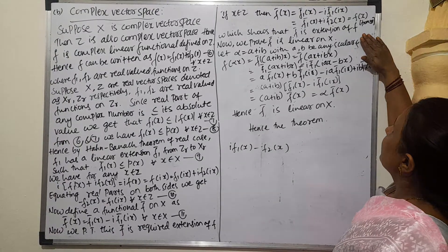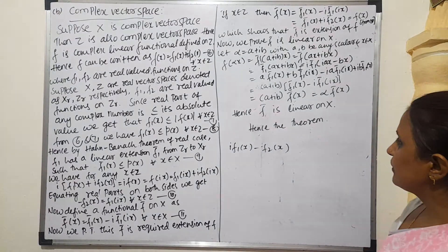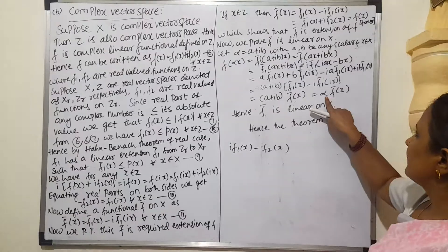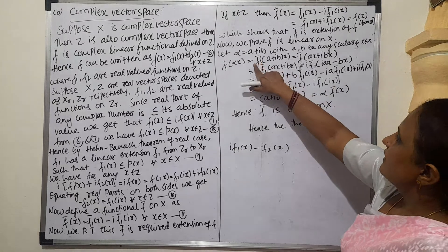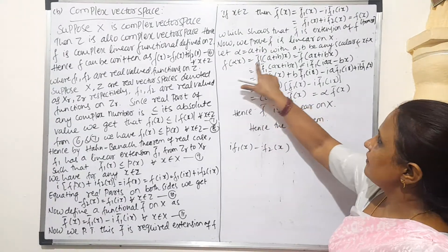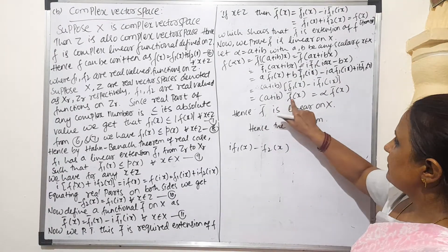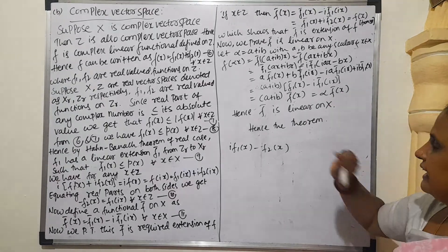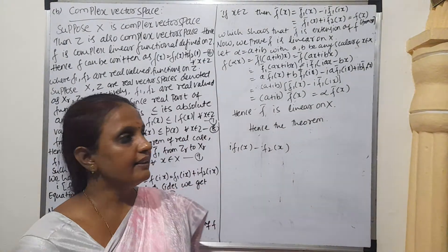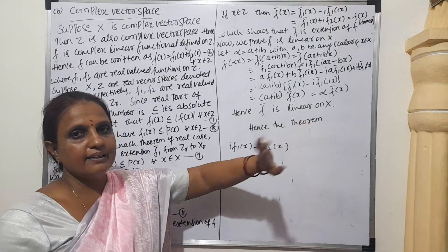Now, with F̄ as the extension, we need to prove that F̄ is linear. To prove linearity, we show F̄(αx) = α·F̄(x). Since we have taken a complex vector space, α = A + iB. Substituting A + iB in place of α and simplifying, we get (A + iB)·F̄(x), which equals α·F̄(x). Hence F̄ is linear on X. Therefore there exists an extension F̄ on a complex-valued vector space, and the theorem is proved.